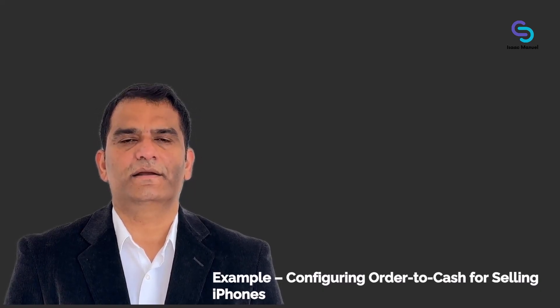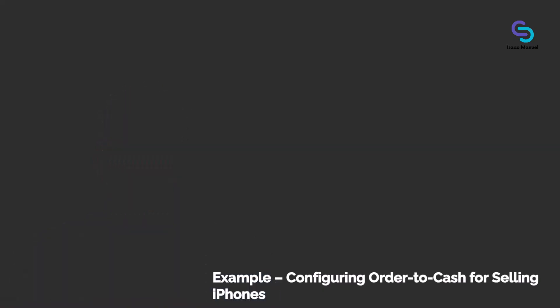Here are the key configuration steps Apple would take. First is organizational elements for sales. Apple defines the sales org structure. For example, sales organization US01 — Apple USA Sales — with distribution channel RET for retail (Apple Stores) and distribution channel ONL for the Apple Online Store, and division ELD for electronics devices. These help classify sales orders. In CBC, Apple fills in these values under a task like setup sales organizations and channels.